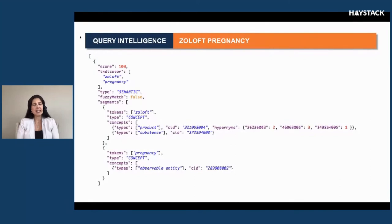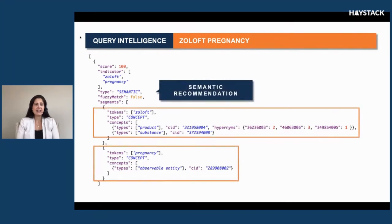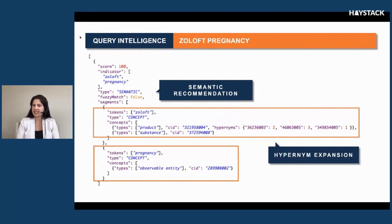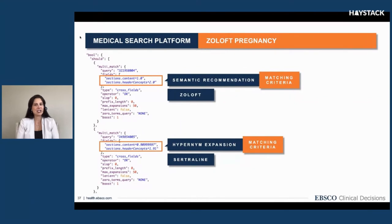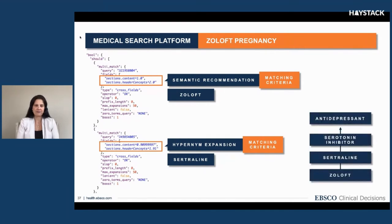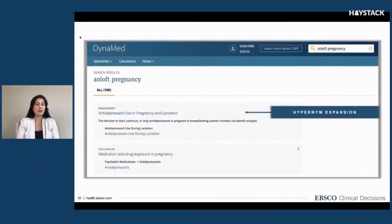When query intelligence receives this query, it returns both segments and automatically performs hypernym expansion. Notice it is selective — it does not perform this on pregnancy, but it did on the product Zoloft. The example payload shows concept IDs associated with the expansions, and we also represent the distance of these expansions in our knowledge graph, which allows us to apply a decay weight when searching. The medical search platform applies the highest boosting on the original term Zoloft, and the boost decays as it expands through the graph, creating a bridge between a specific query and the content represented in our system.